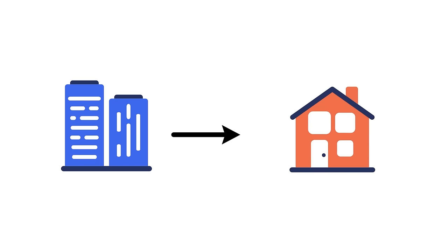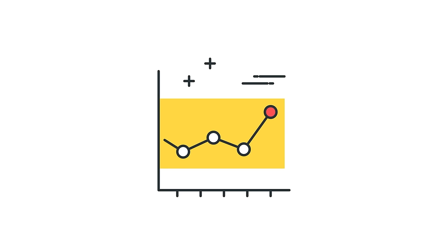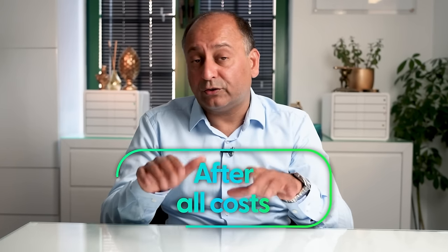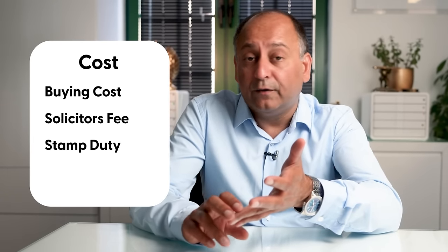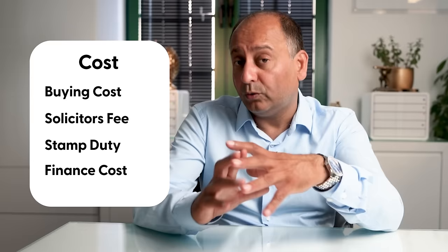It's really important when you're converting commercial properties into residential that you work out your profit margins right from the beginning. We work out profit margins after all costs — so it's not just the purchase price. Keep in mind, you've got the buying costs, solicitor's fees, stamp duty, land tax, and financing costs. All of these have to go into your costs, so you work your margin out after all costs. Your lenders, if you're getting finance, will also be wanting to know what these finance costs are.